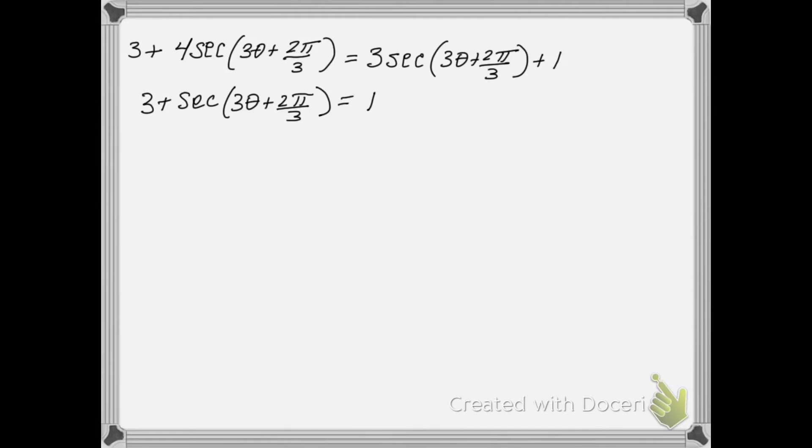So the 4 minus the 3 leaves 1. I'll subtract this 3 here. And then I've got this equation where I've got a trig value equal to negative 2.